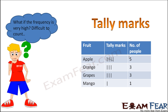In tally marks, we keep the same frequency distribution table, but we introduce an additional column of tally marks. In this column, the frequencies which we had written as numbers — 5, 3, 3, 1, and so on — instead of writing them as numbers, we just keep drawing lines whenever we come across the same entry.